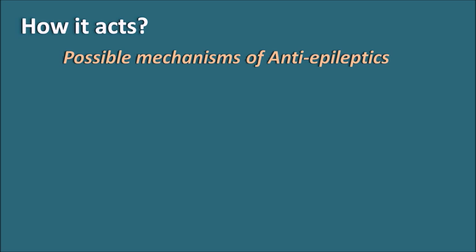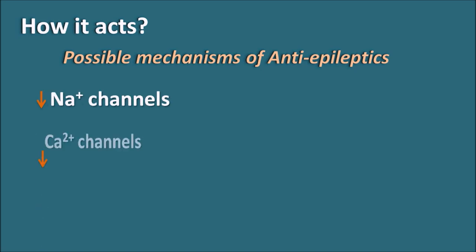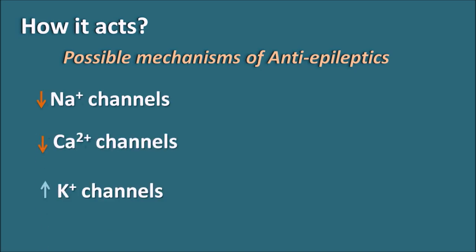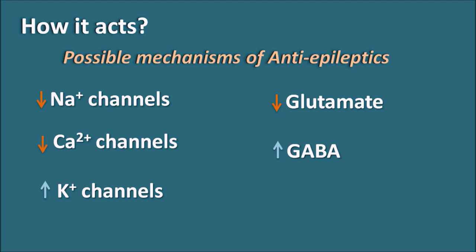Before discussing the mechanisms of valproic acid, let us see the possible mechanisms for antiepileptics in general. Antiepileptics act by inhibition of excitation or enhancement of inhibition. They may generally act by blocking sodium channels, blocking calcium channels, or opening potassium channels. They can also affect mediators like glutamate — inhibiting this excitatory mediator — or increase GABA, which is an inhibitory mediator.